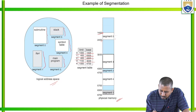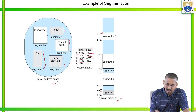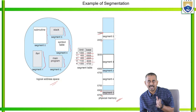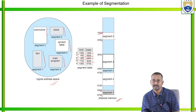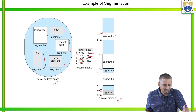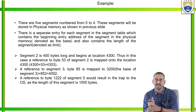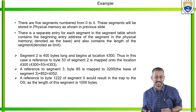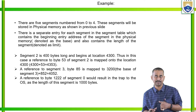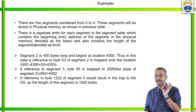There are 5 segments numbered 0 to 4. Each segment has a separate entry in the segment table containing the base address — the beginning address of the segment in physical memory — and the limit, which is the length of the segment. For example, segment 2 has only 400 bytes and begins at location 4300.